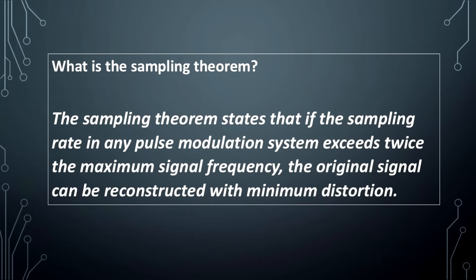What is the sampling theorem? The sampling theorem states that if the sampling rate in any pulse modulation system exceeds twice the maximum signal frequency, the original signal can be reconstructed with minimum distortion.